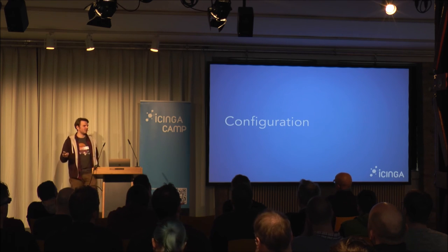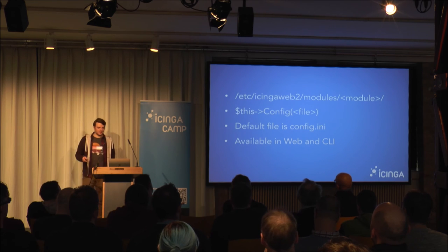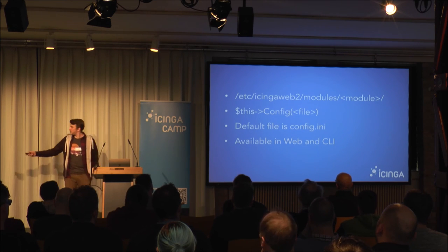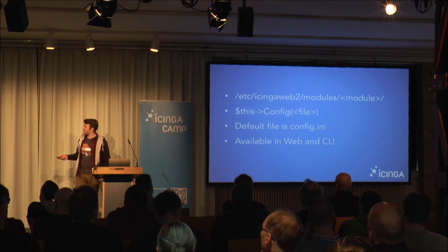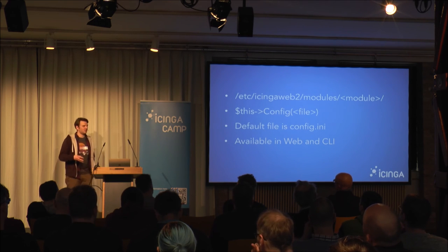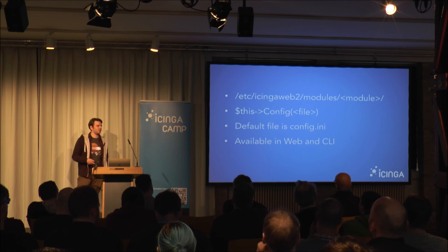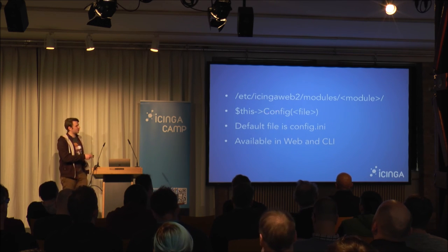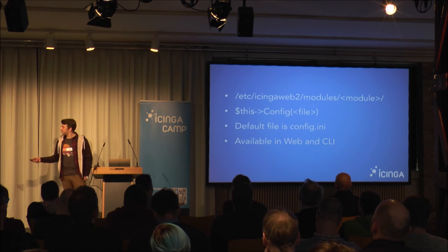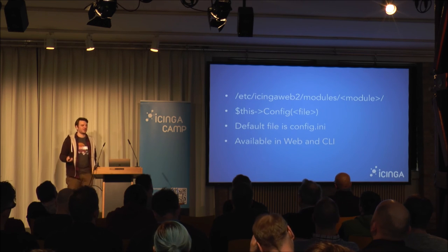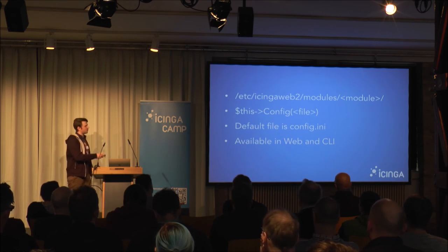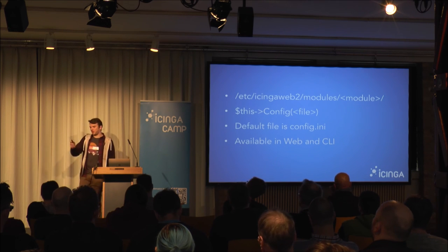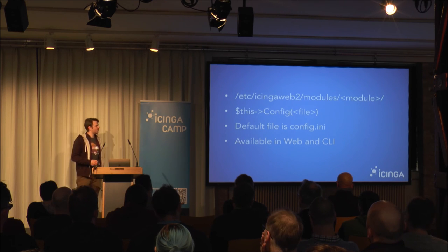Let's go to configuration — I will show you how easy it is to use the INI configuration. Module configuration is put in /etc/icingaweb2/modules/modulename — this is the default path from a package installation. In web and CLI you can overwrite this directory. In controllers we have the function Config() with an uppercase C which loads config from a file — the default file is always config.ini. You can also put more INI files in your module directory and load them by specifying the filename.